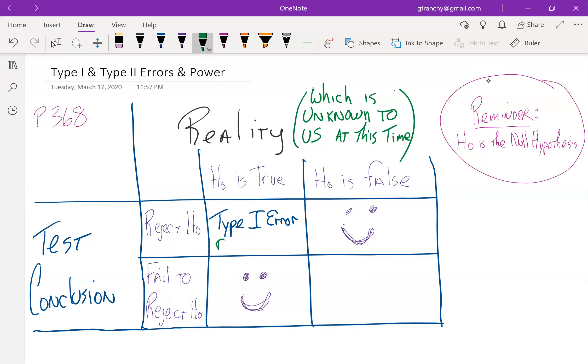And this is the equivalent of a false positive. This would be a case where we conclude that there's been some sort of change, or we conclude that things are different, or we conclude that there's a relationship between things, or we conclude that a drug or a treatment is effective, when in reality, it's not.